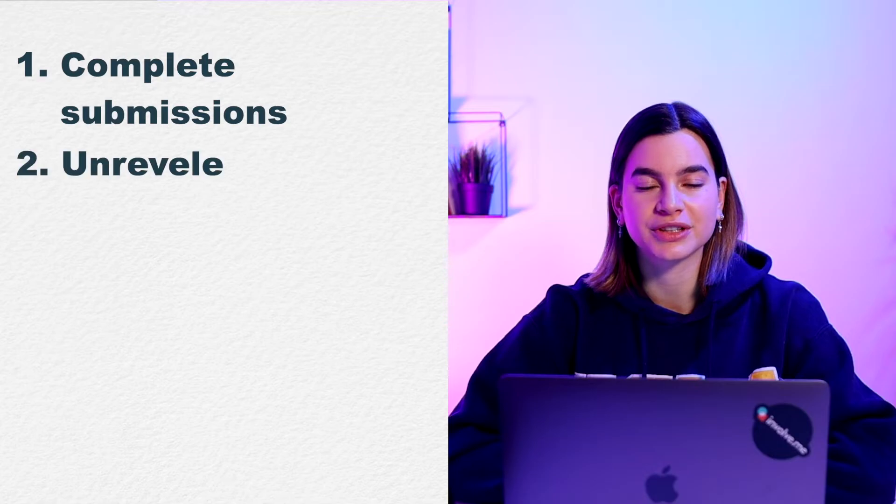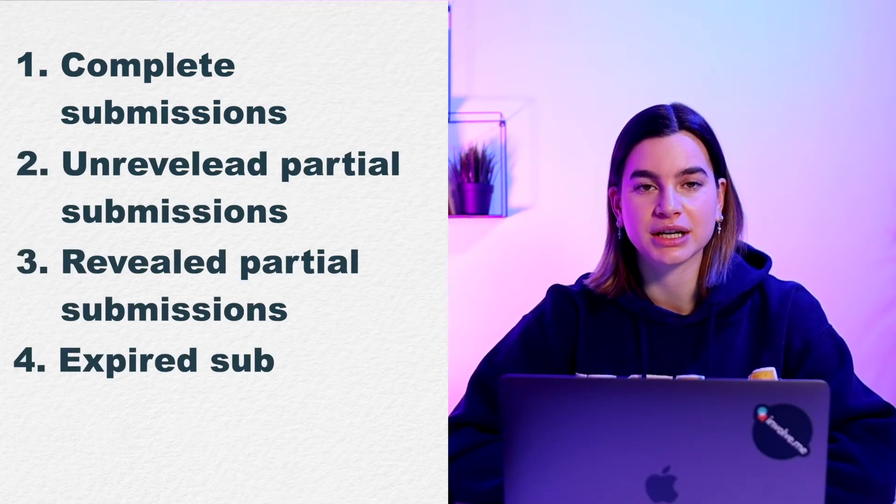Now let's move on to the types of submissions. A submission is created when data is collected through a live Involve.me project. There are four types: complete submissions, unrevealed partial submissions, revealed partial submissions, and expired submissions. A complete submission is made every time a user makes it to the final page of your project — you can be sure that all information you asked for has been filled out. Only complete submissions count toward your monthly submission limit, unless you manually choose to reveal partial submissions. Partial submissions are created when someone fills out some information but not all, and they abandon the project before making it to the final page. Revealed partial submissions do count toward your monthly submission limit. Expired submissions are partial submissions that you have not revealed within 30 days — they disappear completely after 45 days after being safely deleted, due to GDPR and data protection laws and regulations.